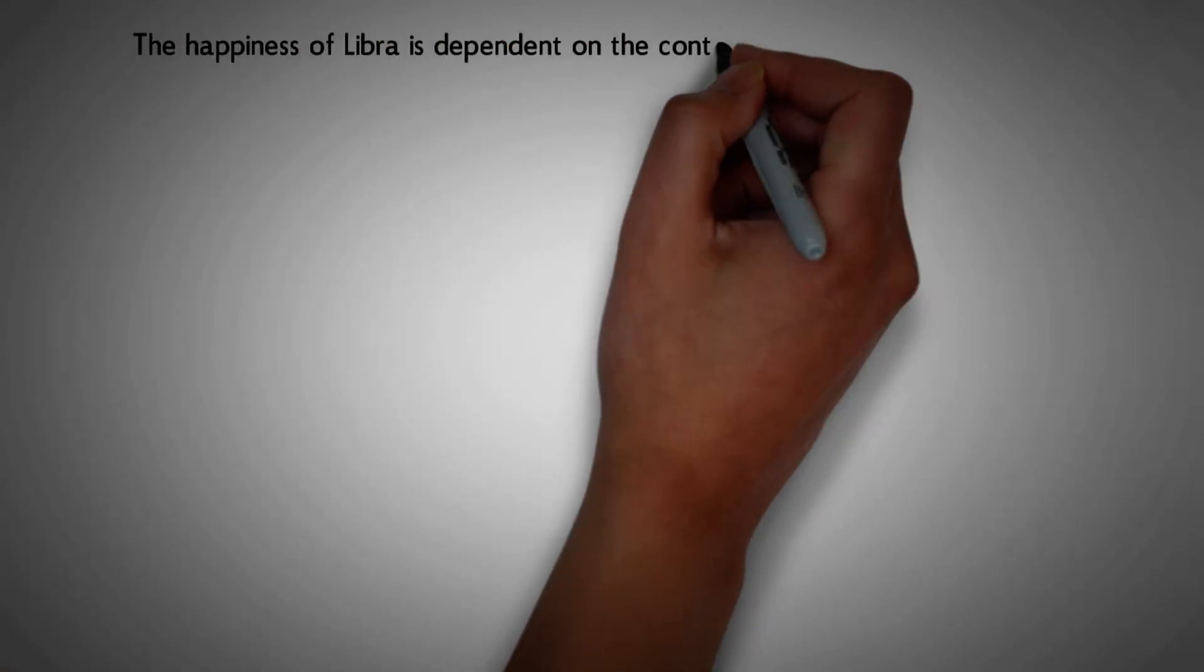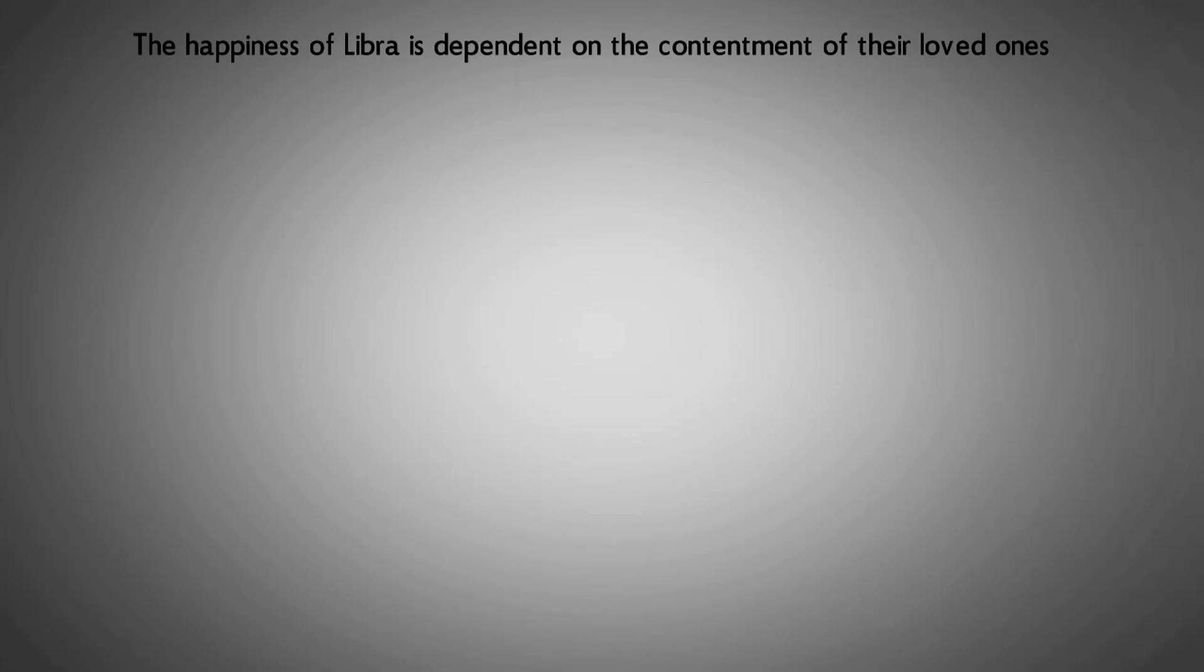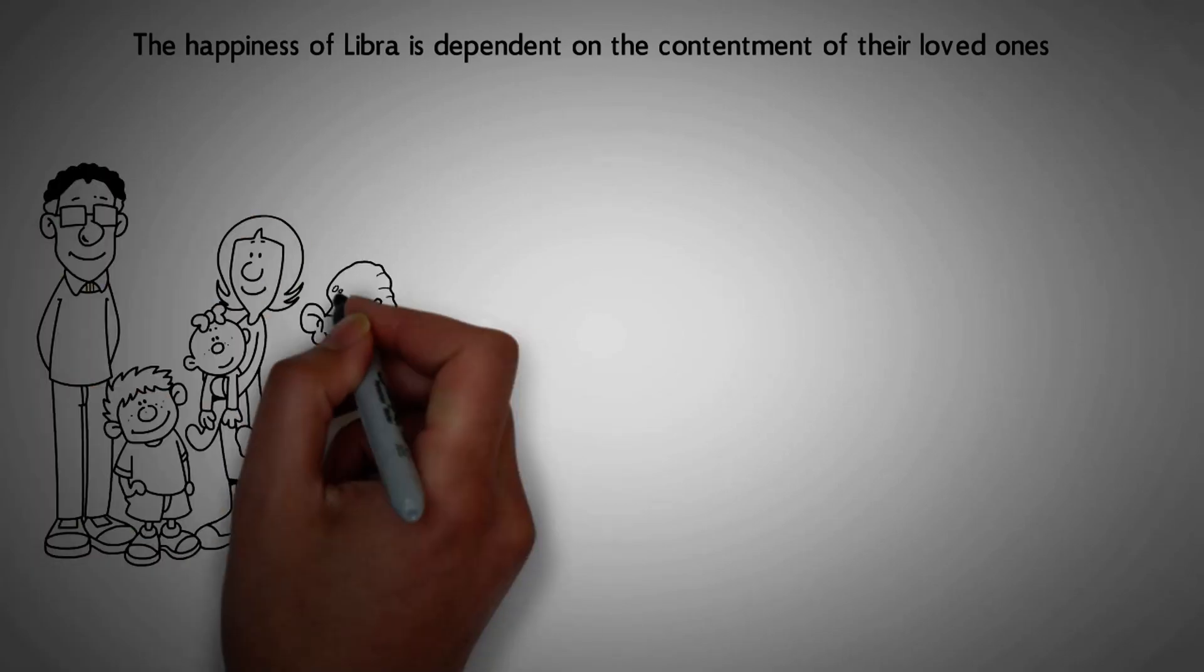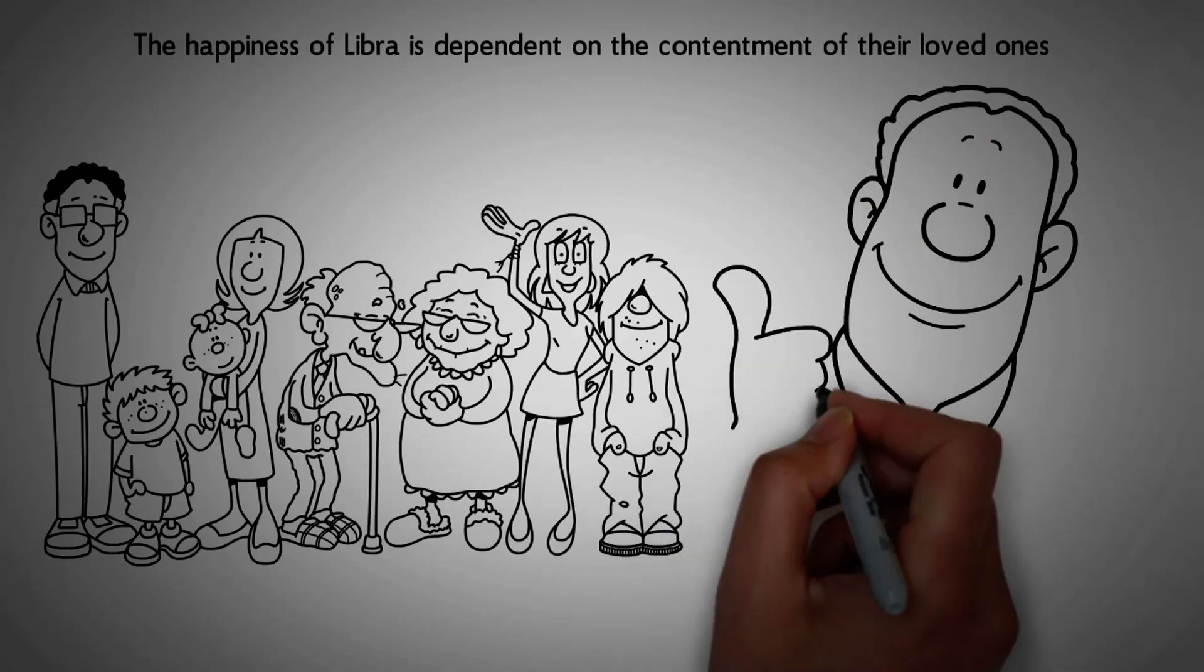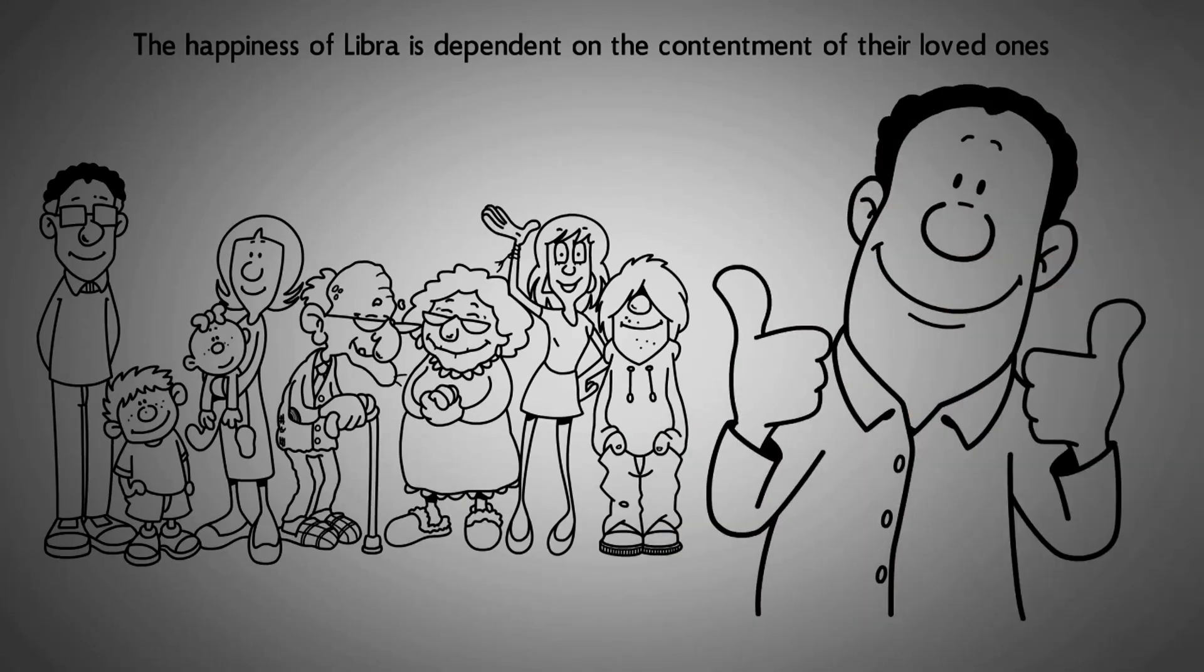Number 21. The happiness of Libra is dependent on the contentment of their loved ones. Libra is a peacekeeper. They focus on the happiness of friends and family. Their happiness is fulfilled when others are happy, and they make the best companions.